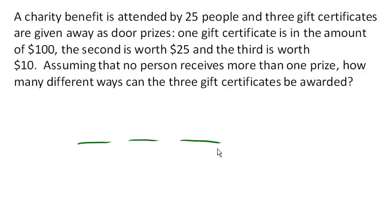So how many choices do we have for the first prize, for the $100 prize? Well, there's 25 people, so there are 25 possibilities for that prize. How about for the second one, for the $25 prize? Well, there's no repeats, right? No person receives more than one prize. So there's only 24 people now.